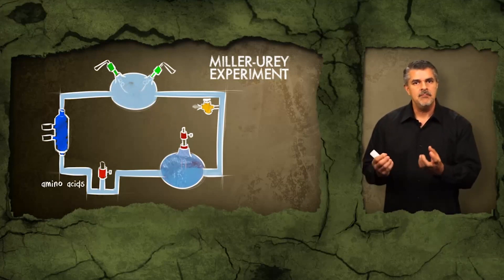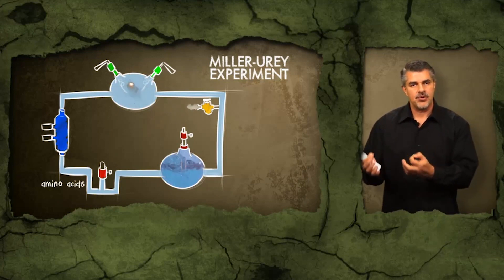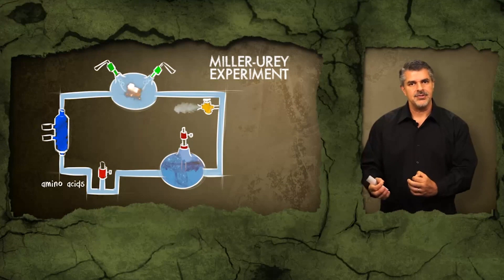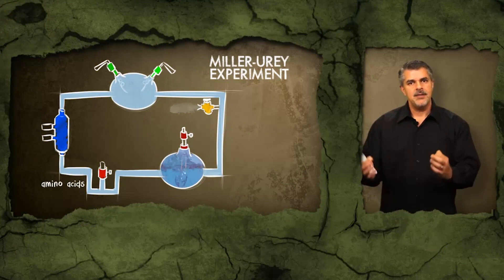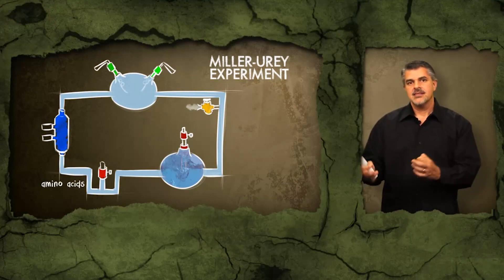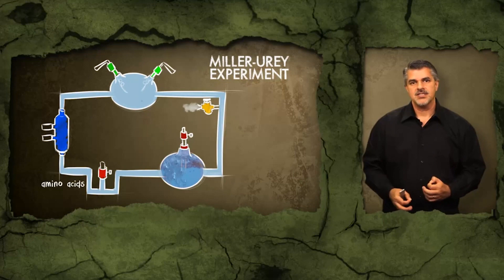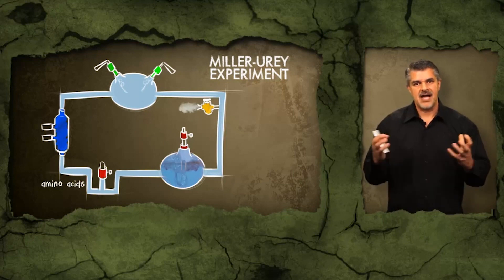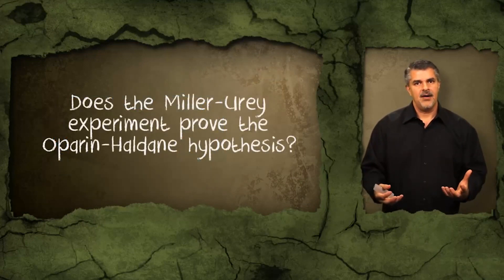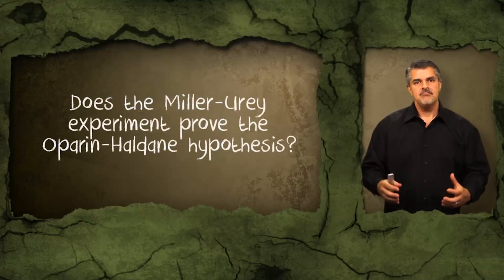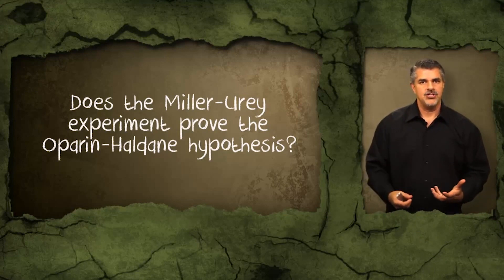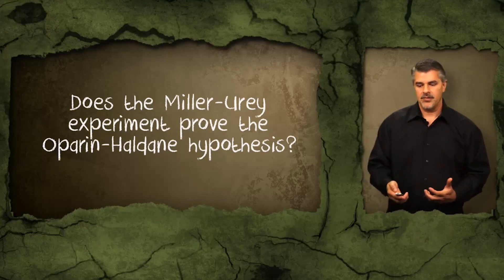Amino acids are the building blocks of proteins, which are very important life molecules. People believed at that time, and even today, that Miller's famous experiment validates the Oparin-Haldane hypothesis, making it scientifically reasonable for abiogenesis to take place.